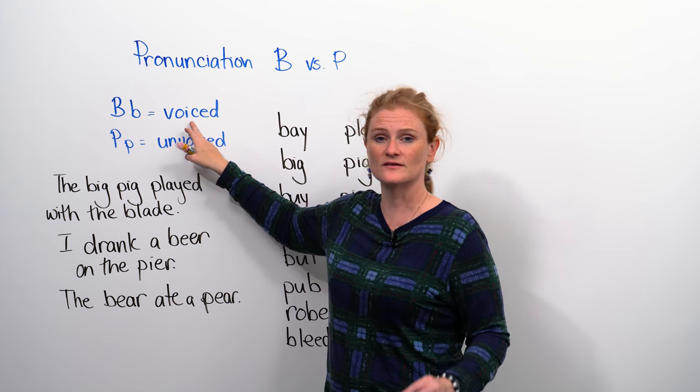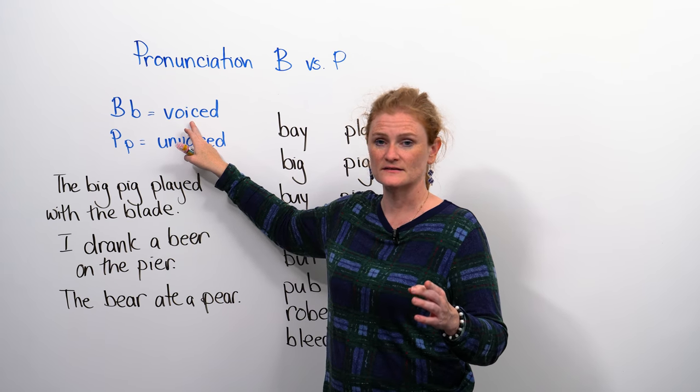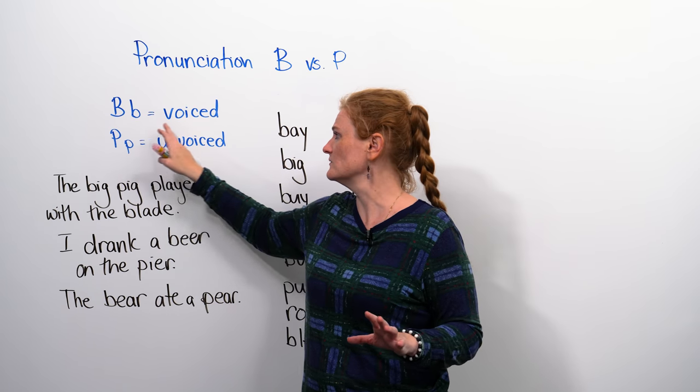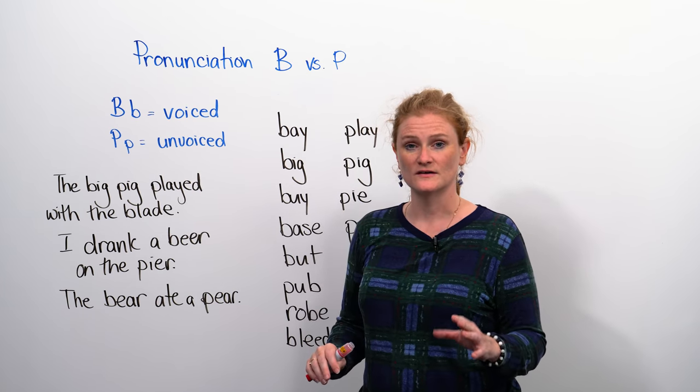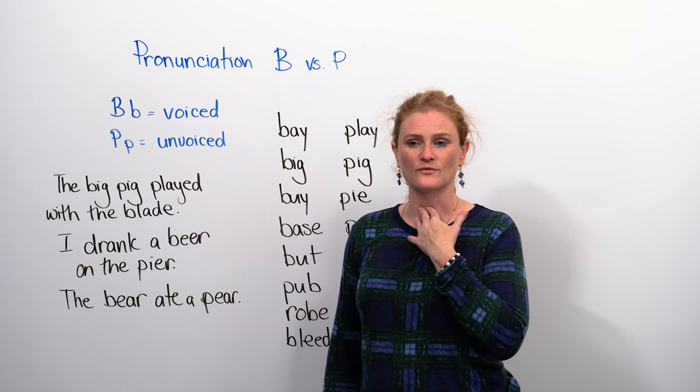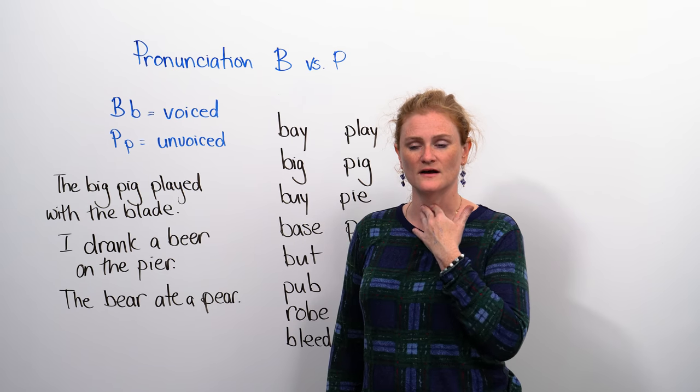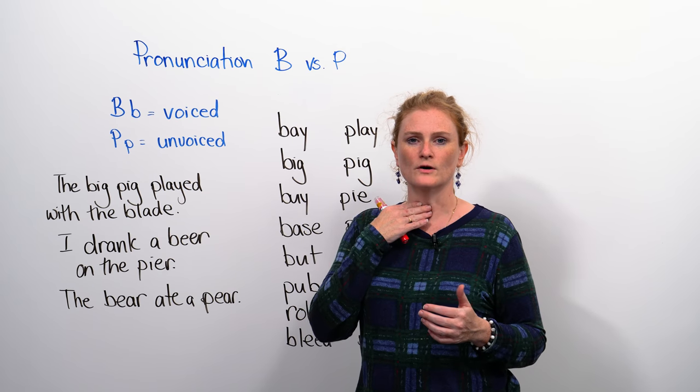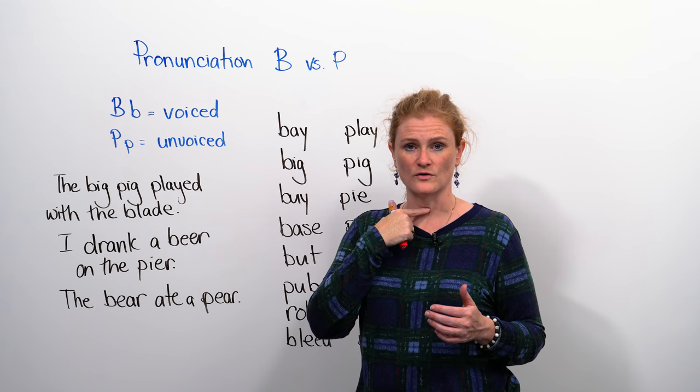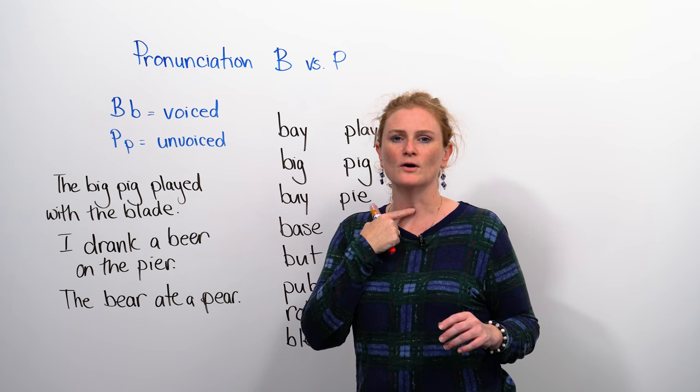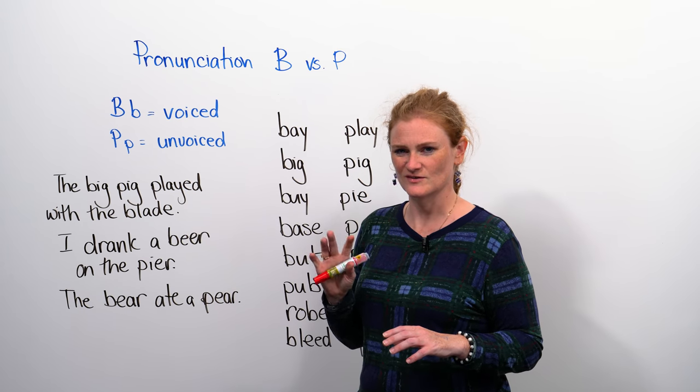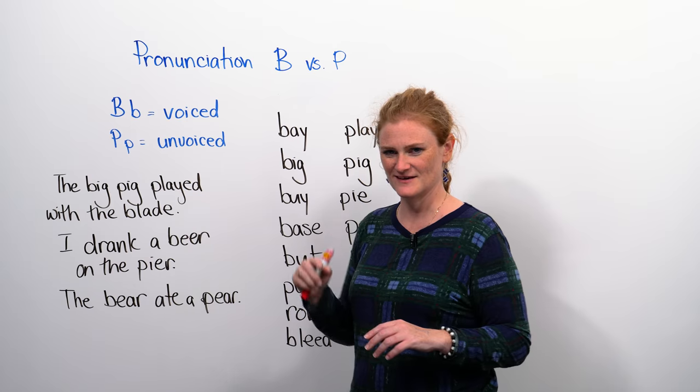Now, a B sound will always be voiced. Voiced means that it will vibrate in your throat. So if you put your hand here and you make the B sound, it's going to always vibrate in your vocal cords. Try: B, B, B. Oh, that's fun. Do it at home. Don't do this on the subway. People might think you're crazy.